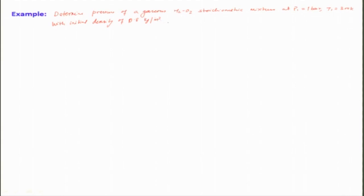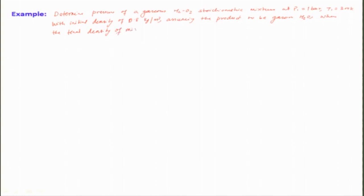Assuming the product of the fluid, when the final density of the mixture is 3.2 kg per meter cube and gamma is 1.2, we will have to find the detonation pressure — that is, P₂.